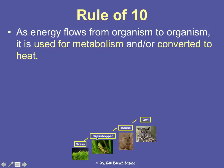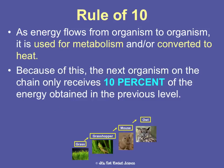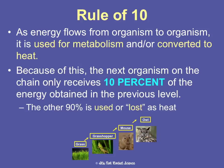Now, the rule of ten: as energy flows from organism to organism, it's used for metabolism or converted to heat. Because of this, the next organism only gets 10% of the energy from the previous level. Grass as a producer has 100% of the energy it makes available to it. When the grasshopper eats it, the grasshopper only gets 10% because the other 90% is used or lost as heat — in quotes, because energy is never truly lost, it just changes forms. The mouse gets 10% of the grasshopper's energy, which is 1% of the original, and the owl gets 10% of that 1%, which is 0.1%.